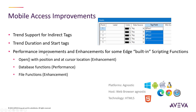We've also added a few performance improvements and enhancements on some of the built-in scripting functions when using mobile access. For example, the open built-in scripting function can now be used with position parameters, and there's also a way that you can just specify those parameters and it will automatically open up the new screen at the cursor location. So wherever you've touched or clicked, that's really nice, especially when you've got a larger screen or an environment where it's going to be nice for the operator to have that pop-up screen right where they're looking. Also for database functions, built-in scripting database functions now have improved performance when being used in mobile access, as well as we've added some of the file functions built in, so now you can use those with mobile access as well.